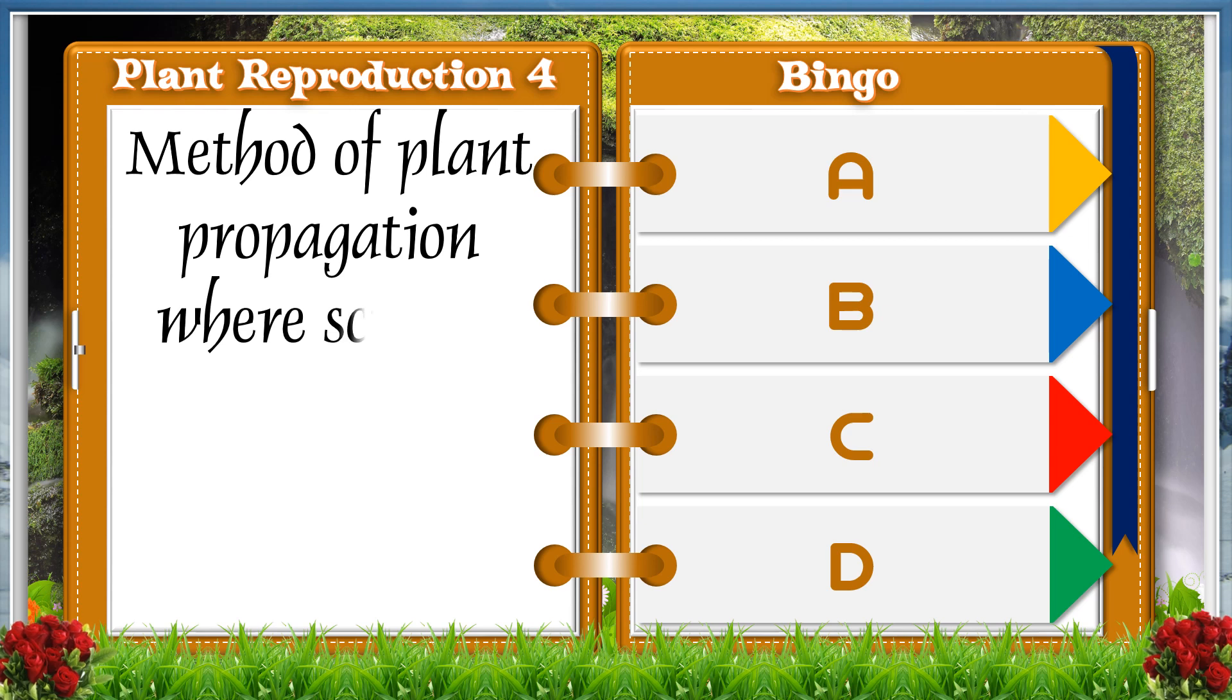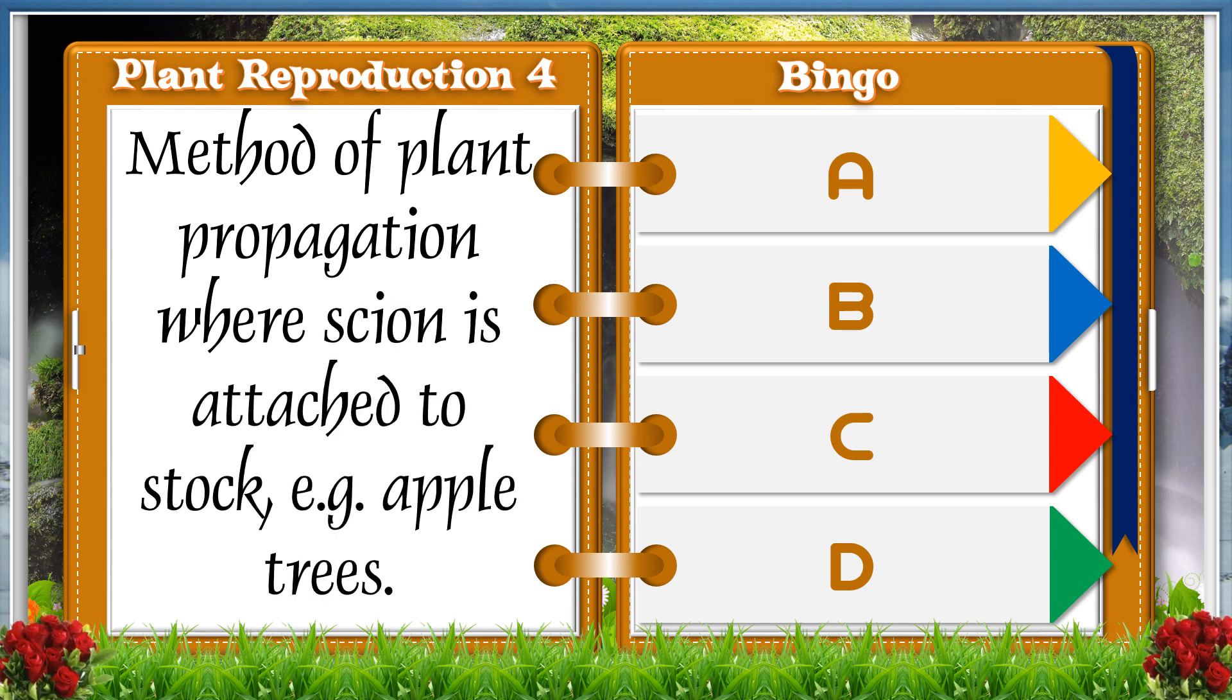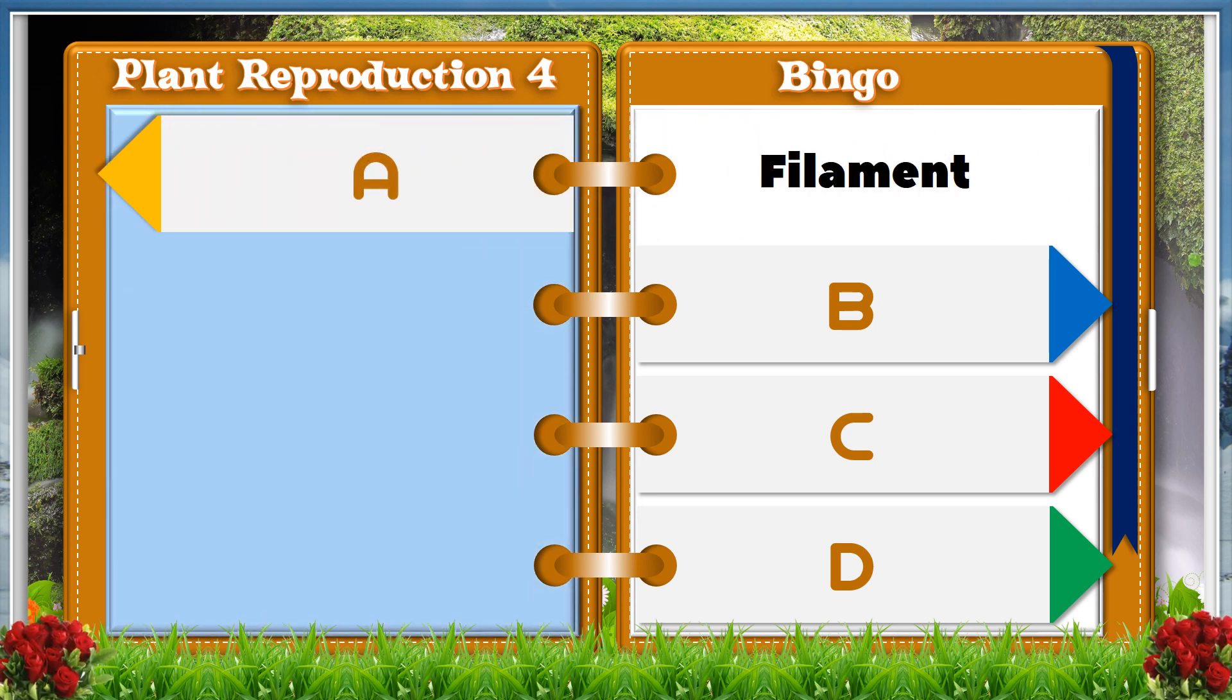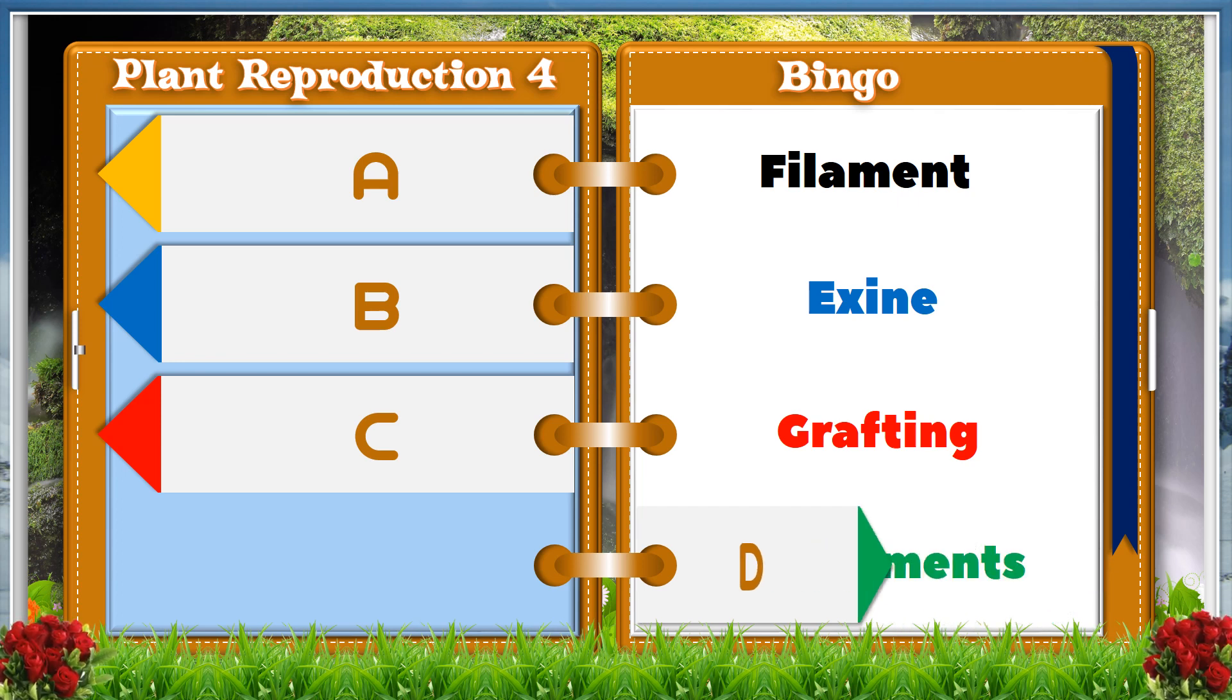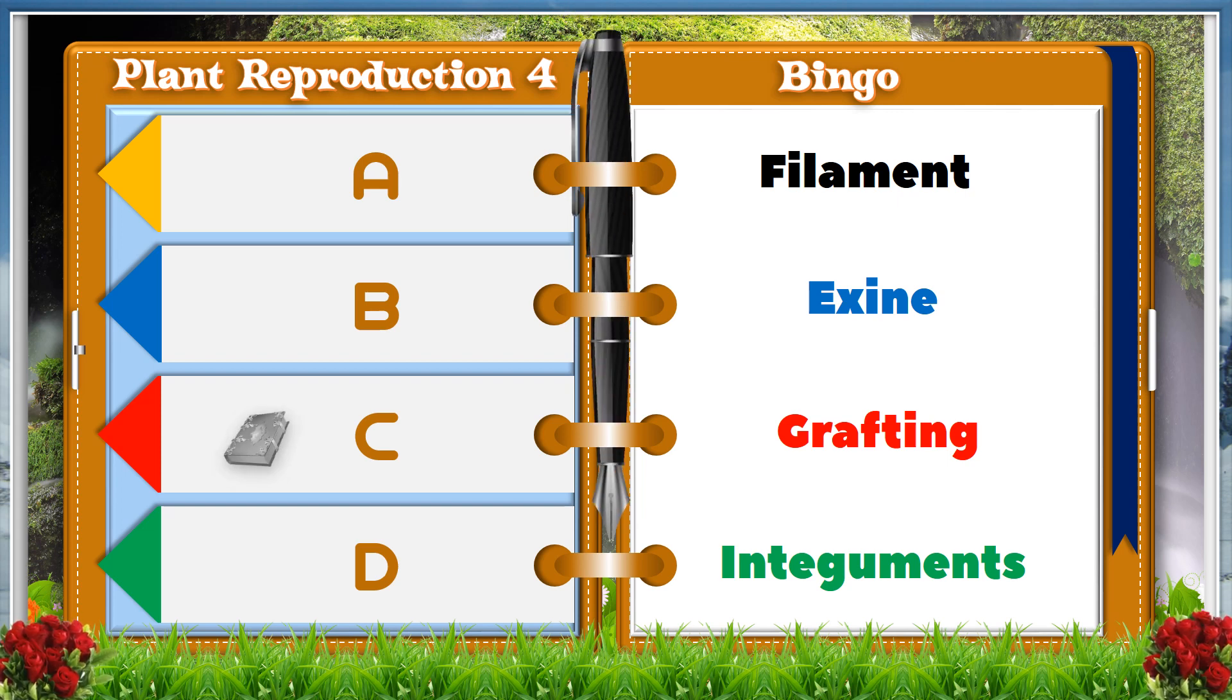Method of plant propagation where scion is attached to stock, for example apple trees. A. Filament. B. Exine. C. Grafting. D. Integuments. And the answer is C, Grafting.